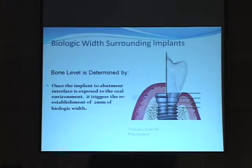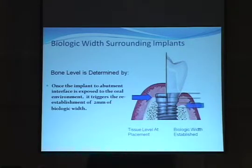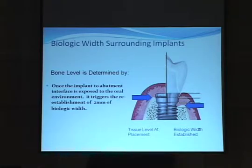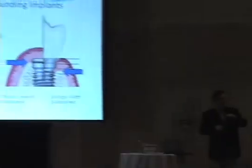When the biologic width forms at tissue placement, the bone is right at the connection where the abutment is and where the implant begins, but over a short period of time changes occur, this biologic width occurs, and the bone drops down — usually to the first thread of the implant. These are for two-stage implants where the connection is underneath the gingiva. So when you look at an x-ray and you see that the bone isn't all the way to the top, it's supposed to be that way, down to the first thread.